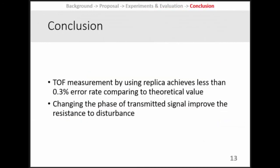This is our conclusion. The TOF measurement by using the replica signal achieved less than 0.3 percent error rate compared to the theoretical value, and changing the phase of the transmitted signal improved the resistance to disturbance. Thank you.